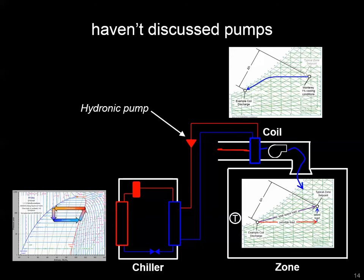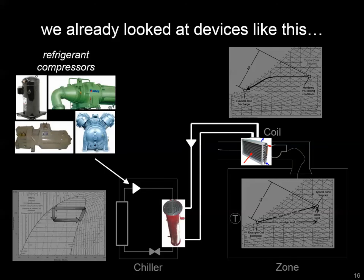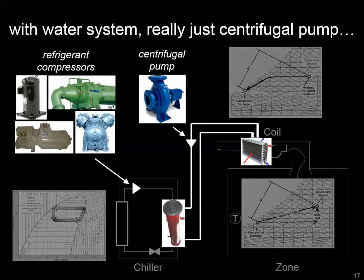Now we're going to turn our attention to something we haven't talked about: the pumping devices that move fluid between the plants and the zone. These pumping systems are designed to transfer heat load between something like a zone coil and the evaporator barrel of a chiller. We laid some foundation when we talked about refrigerant compressors. With water systems, there's not as much variation in devices — the centrifugal pump is really the powerhouse of the HVAC hydronic system.